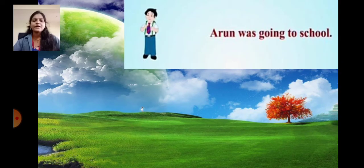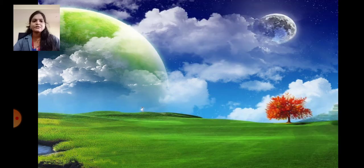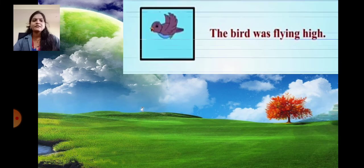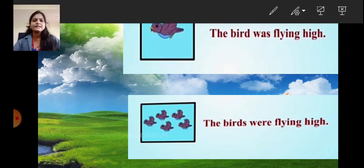Arun was going to school. Arun and Vimal were going to school. Here Arun — only one boy — so was is used. Here more than one boy, so were is used. The same way: the bird was flying high, the birds were flying high. Here single bird, so was is used. Here more than one bird — plural — so were is used.